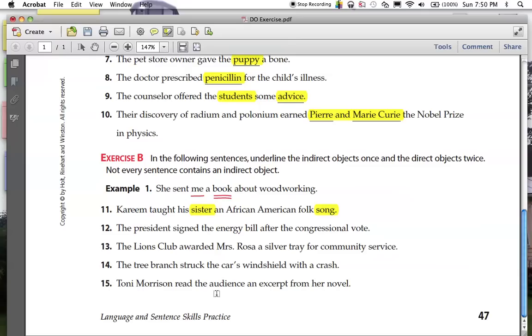The president signed what? A bill. Direct object. Did he sign that bill to or for anybody? No. Remember, between signed, the verb, and bill, the direct object, is where the indirect object would live. And these are both adjectives modifying bill, so there's no indirect object.